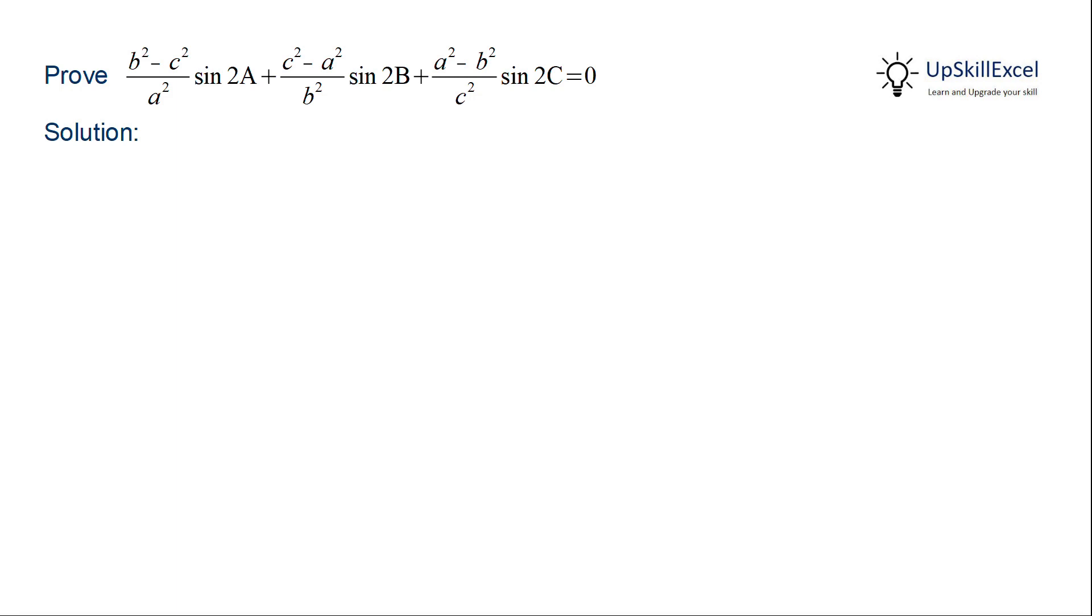Prove that the trigonometric function consisting of summation of side and angle is equal to zero. Here we have three terms and each term consists of side and angle, but the angle is of the format of 2a, 2b, 2c.